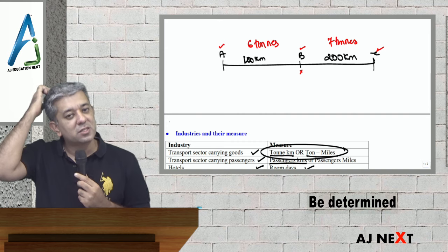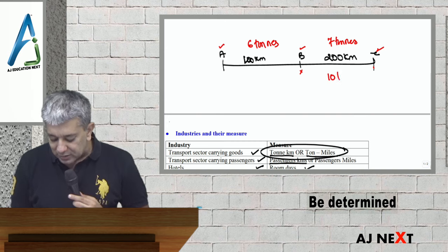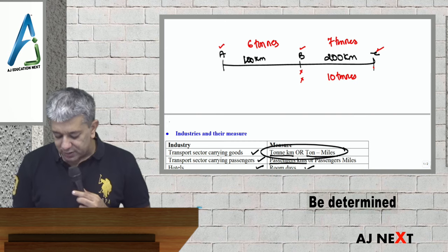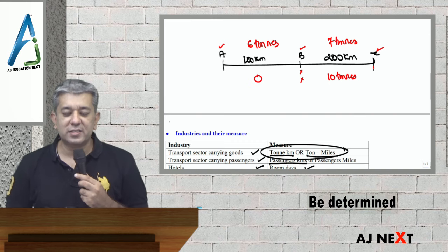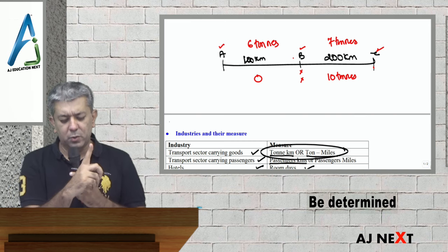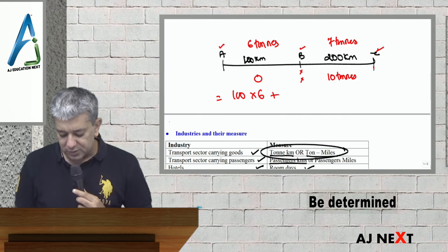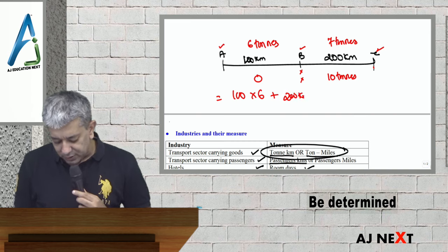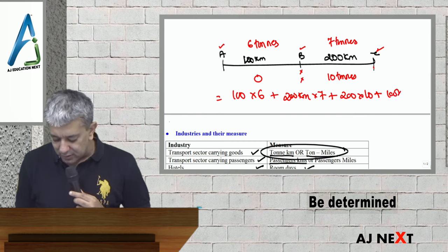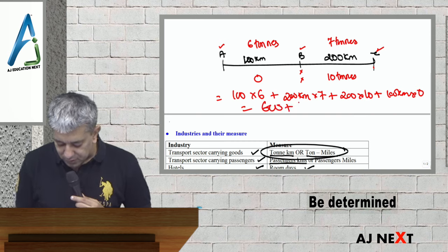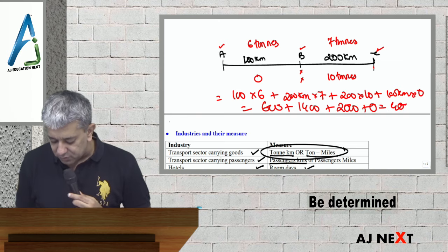It will also get some customers to be taking the goods from C to B and A. Toh C to B aa raha tha, 10 tons ka weight leke. Yeh sara ka sara order station B ke liye tha — sab khali kar diya. Aur uske baad, khali aaya from B to A. Agar aapko koi bole calculate number of ton-kilometers for this round trip, toh simple hai: 100 km into 6 tons, plus 200 km into 7 tons, plus 200 km into 10 tons, plus 100 km into 0 tons. So 600 + 1400 + 2000 + 0 — number of ton-kilometers: 4000. That's it.